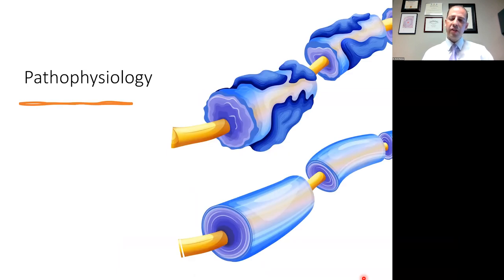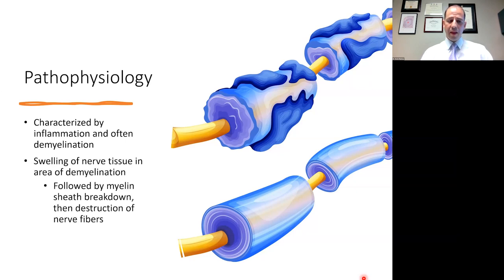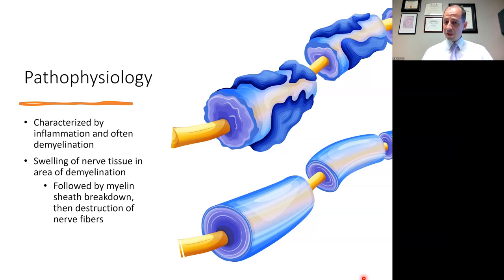With regard to the pathophysiology of optic neuritis, it is characterized by inflammation and often demyelination of the optic nerve. That happens from swelling of nerve tissue in the area of demyelination, followed by myelin sheath breakdown and then destruction of nerve fibers. The consequence of myelin sheath breakdown is that nerve conduction through the optic nerve slows down and some decreases altogether. When optic neuritis recovers, the myelin is restored to some degree but not perfectly, and that results in some of the permanent decrease in vision we sometimes see after a case of optic neuritis.